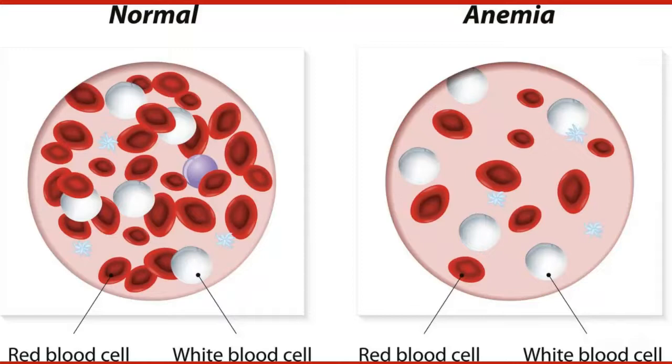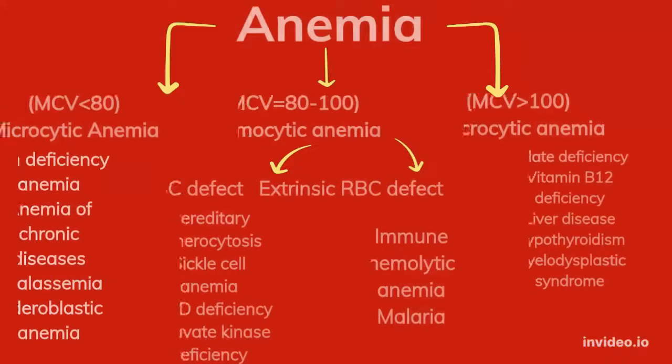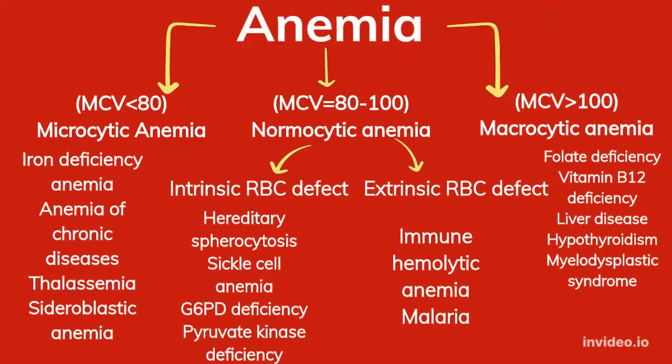Based on MCV values, anemia is divided into three categories. To understand what MCV is, please follow my previous video on erythrocyte indices, where I have explained all the RBC indices in detail. The link is in the description.